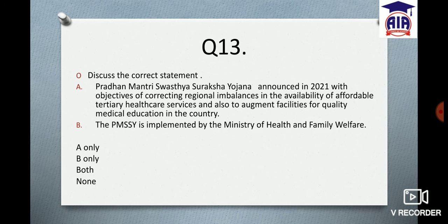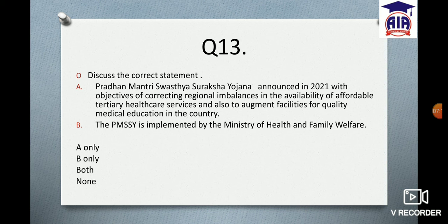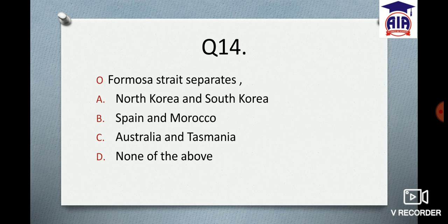Next question: Discuss the correct statement. Statement one: Pradhan Mantri Swasthya Suraksha Yojana was announced in 2021 with the objective of correcting regional imbalances in availability of affordable tertiary healthcare services and to augment facilities for quality medical education in the country. Statement two: The PM Swasthya Suraksha Yojana is implemented by the Ministry of Health and Family Welfare. Options: A only, B only, Both, or None. Type your answer.